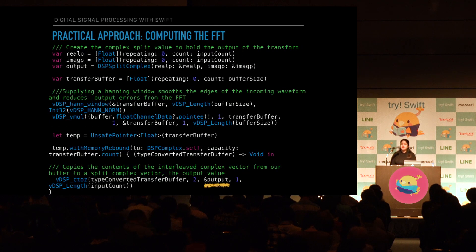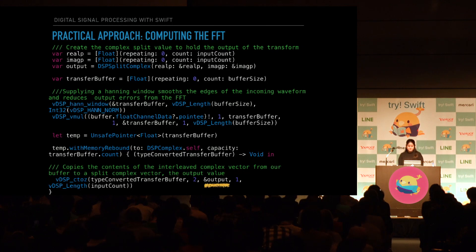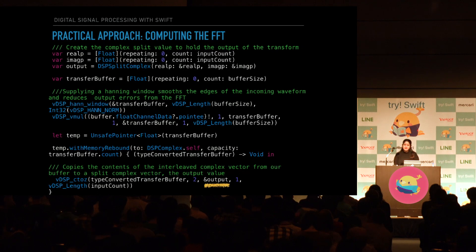Next, we'll create our complex split value to hold the output of the transform. DSPSplitComplex is the data type defined in the VDSP library that simply has two components: real and imaginary. The output of a Fourier transform is essentially a sequence of complex numbers, which correspond to the two-dimensional result of the rotation procedure. A real array must be transformed by calling VDSP_ctoz, which includes the Nyquist component that we mentioned earlier. Before we do that, we'll apply the VDSP Hann window, which helps us to avoid spectral leakage.